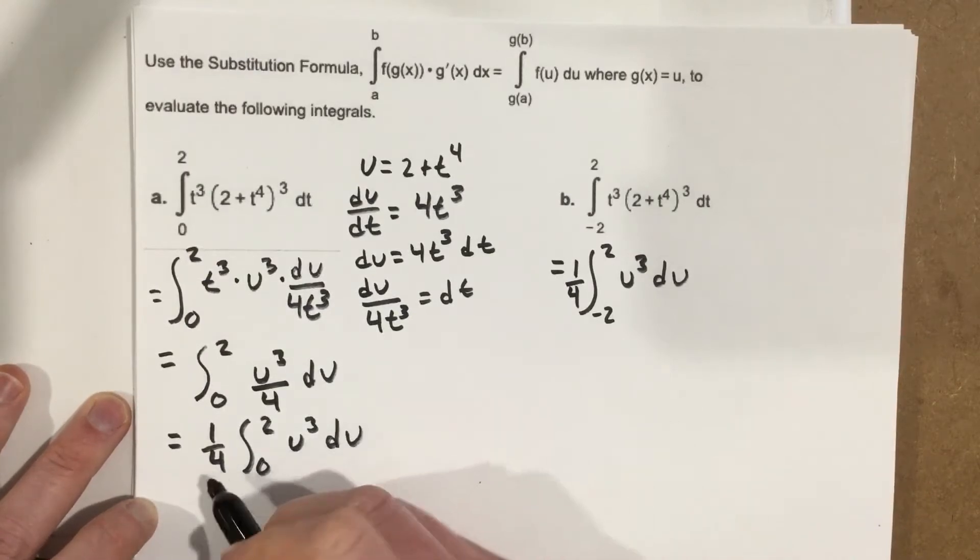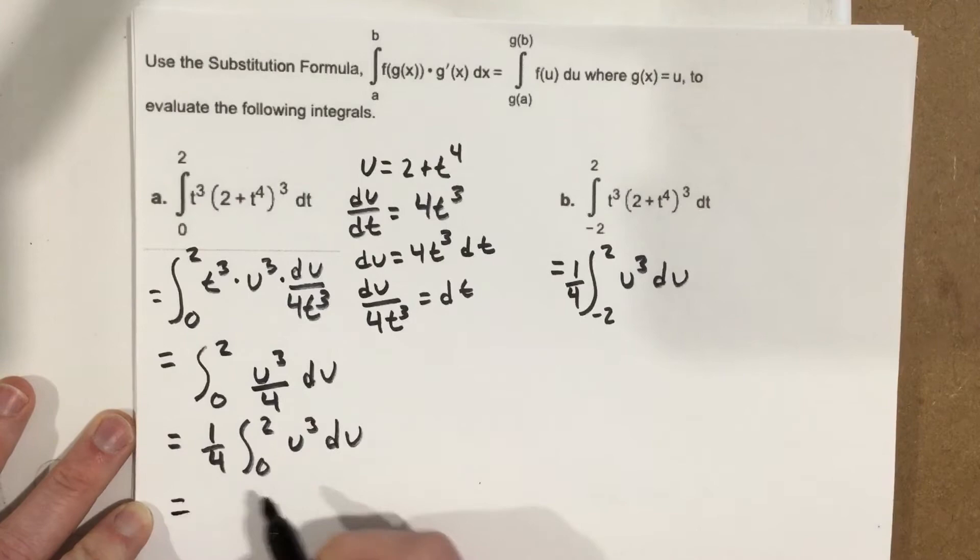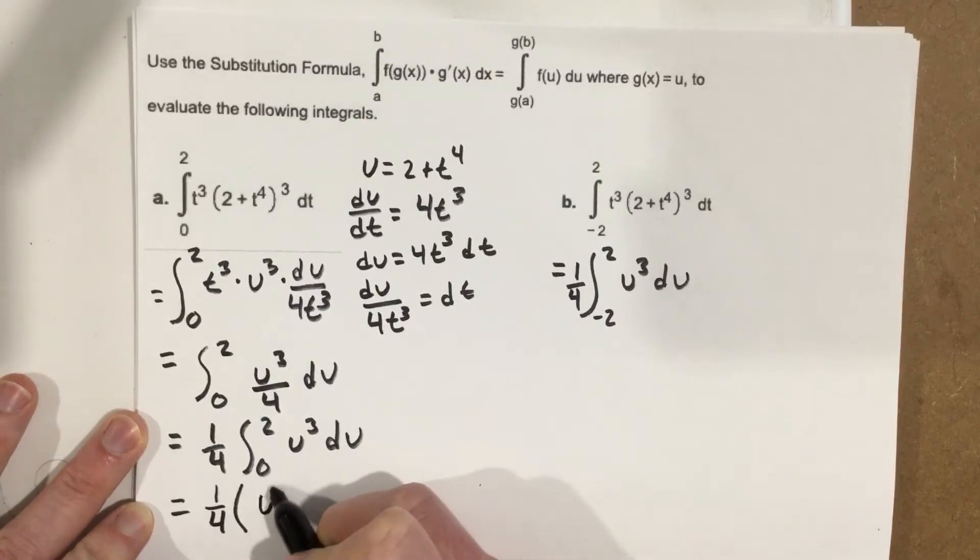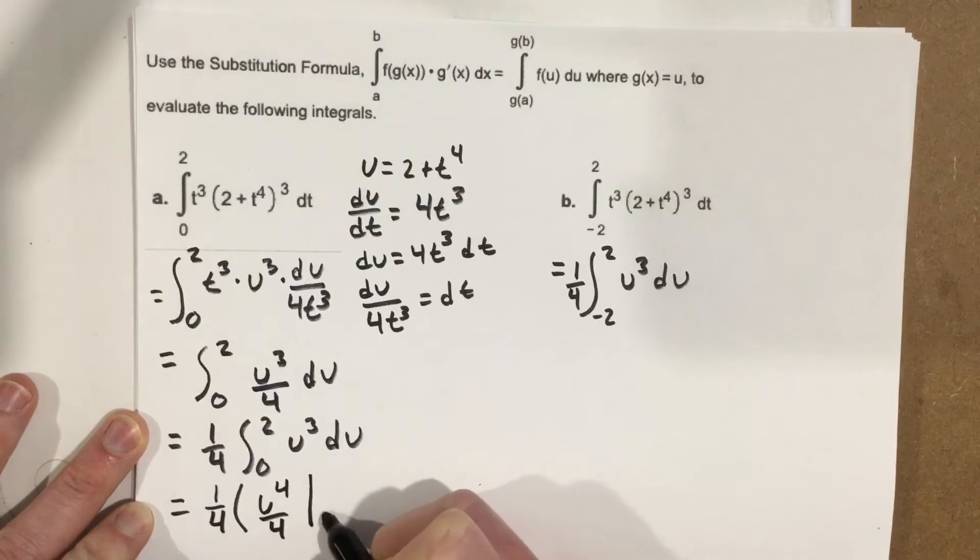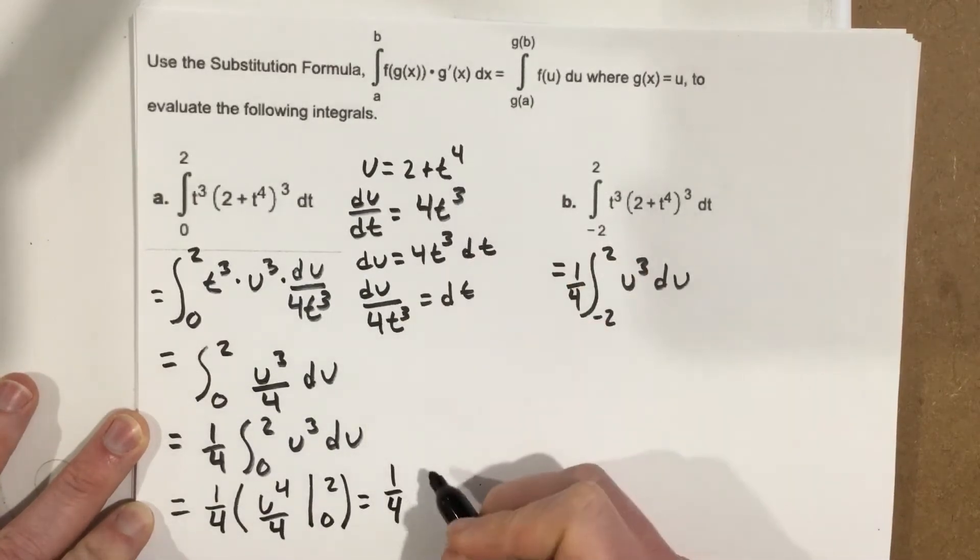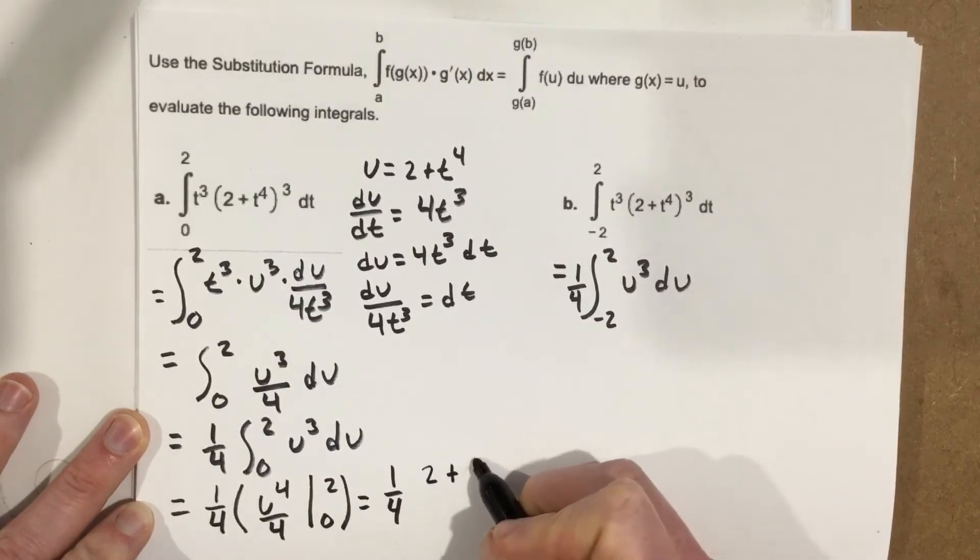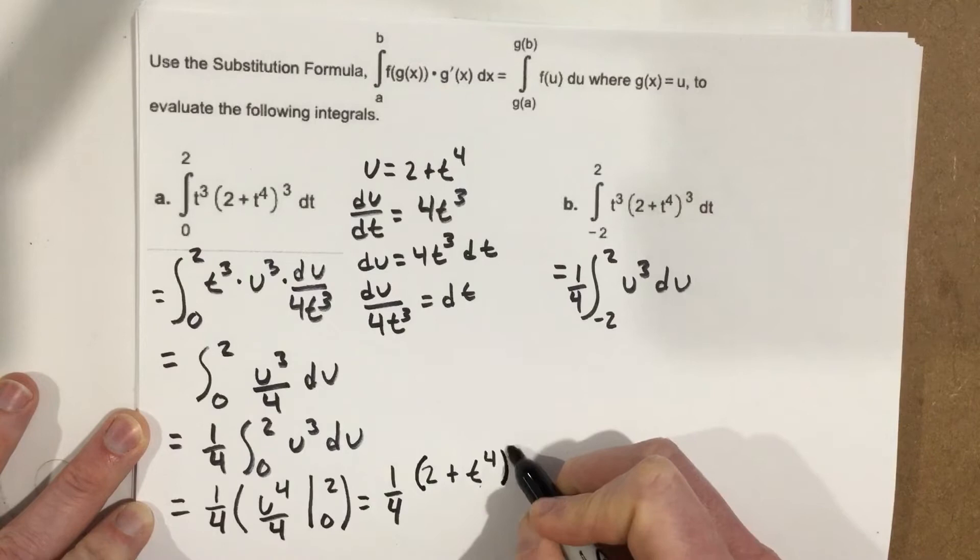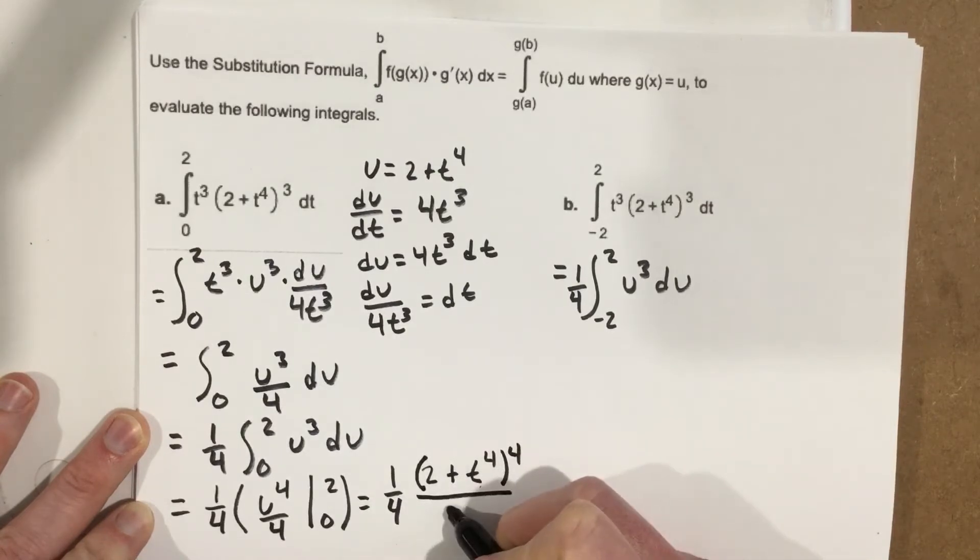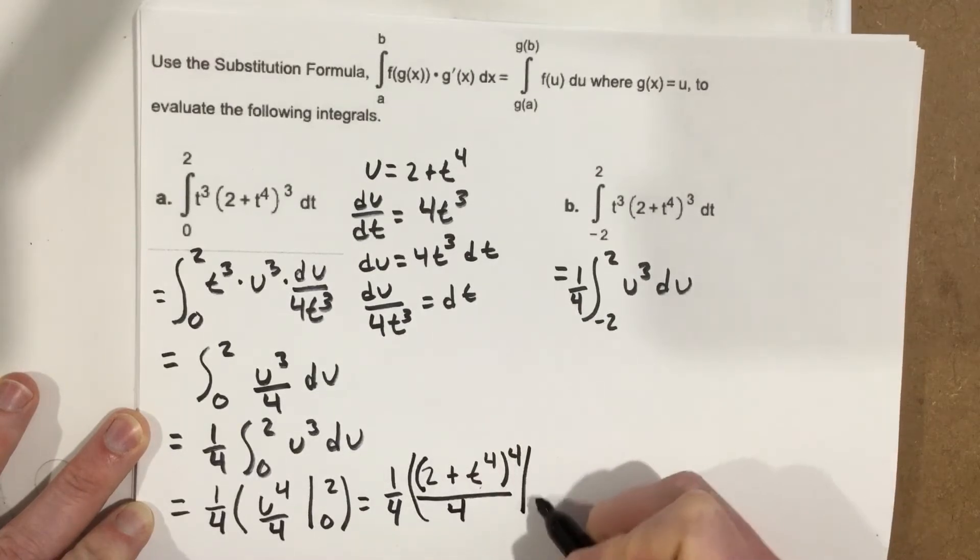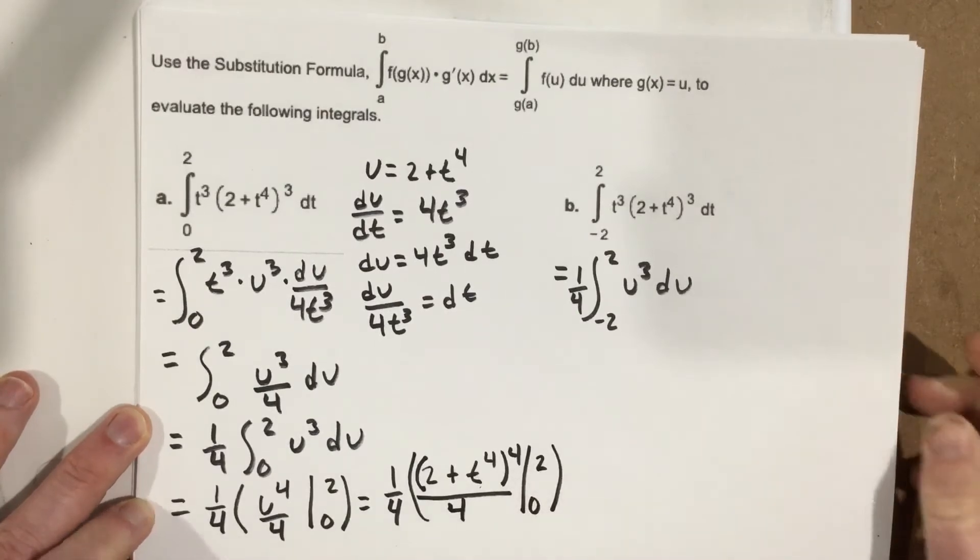Alright, now let's go ahead and solve this one here. So, this is going to give you, when you do the integral, you'll get 1 4th, parentheses, that's u to the 4th, over 4, evaluated from 0 to 2, which is going to equal 1 4th, if I plug this back in, this u part, that'd be 2 plus t to the 4th to the 4th power, all over 4, evaluated from 0 to 2, and now I actually have to do the evaluation here.